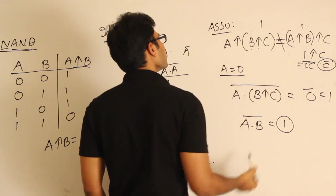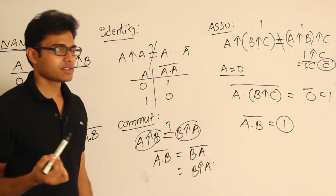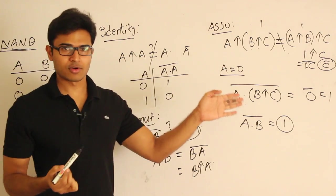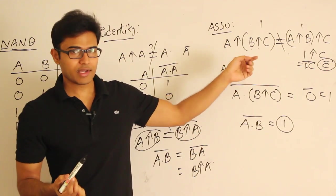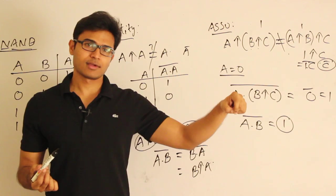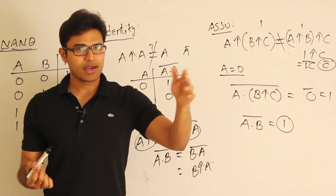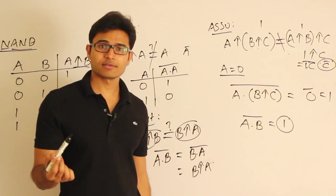You can even check whether NAND is distributive over dot or whether NAND is distributive over plus the same way: write the rule, give some value to A here and the same value to A there, and verify the expressions. If you get different expressions, you are going to say that they are not equal.